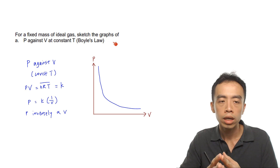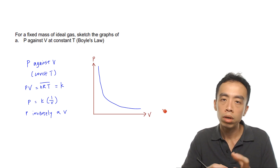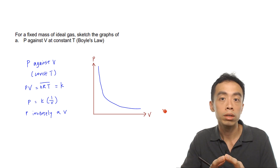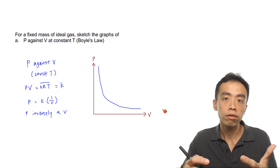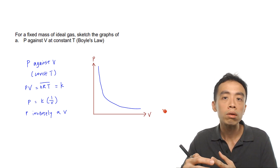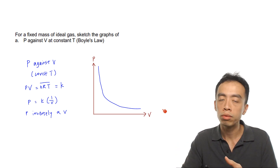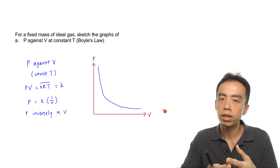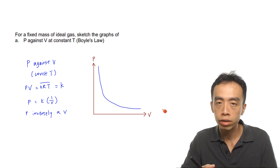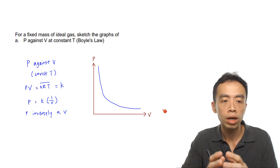To plot a graph of pressure against volume, we rewrite the ideal gas equation in the form y equals mx. This is the technique for graph sketching — by writing the equation in terms of y equals mx, we can determine whether the relationship gives a straight line through the origin or an inverse graph.